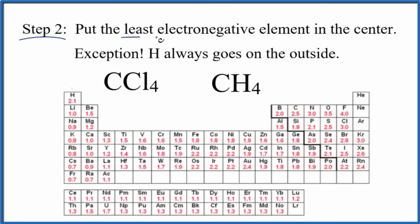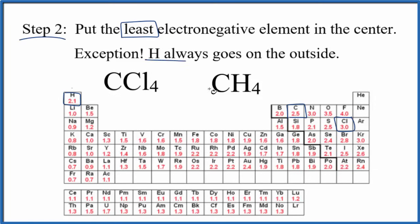In step two, we put the least electronegative element in the center of the Lewis structure. There is an exception though — hydrogen always goes on the outside. For carbon tetrachloride, carbon is 2.5 and chlorine is 3.0, so the less electronegative carbon goes in the center. For CH4, carbon is 2.5 and hydrogen is 2.1, but hydrogen is an exception and always goes on the outside. An easy way to remember electronegativity: as we go towards fluorine — either direction — we become more electronegative, so anything closer to fluorine is more electronegative.